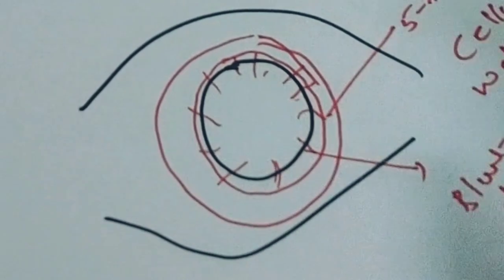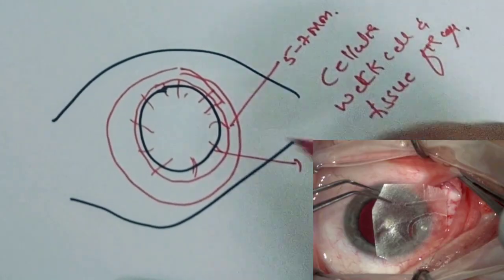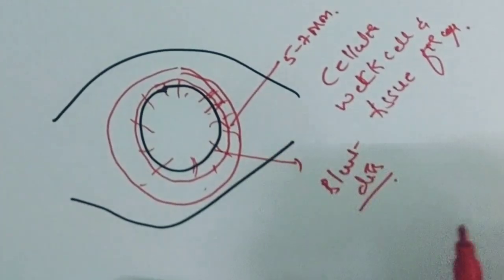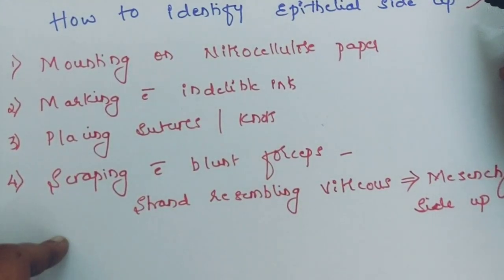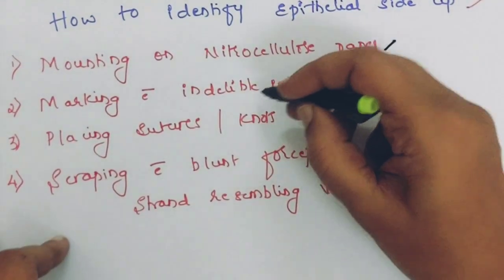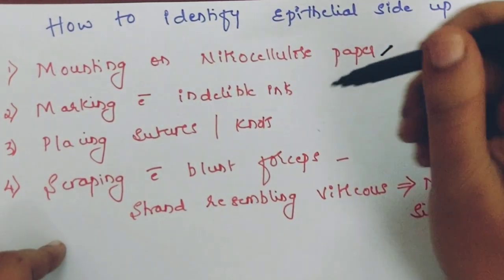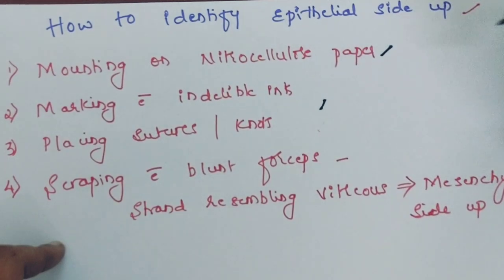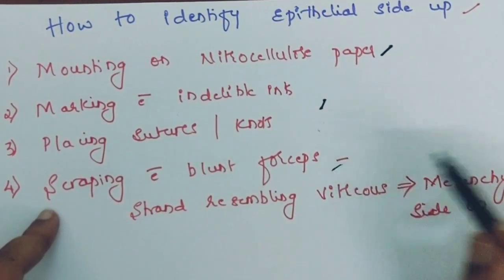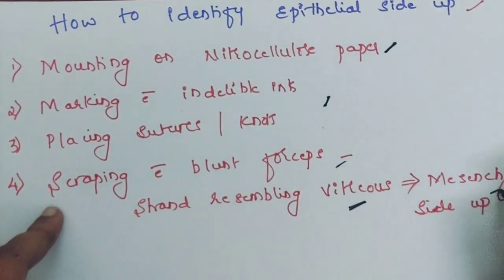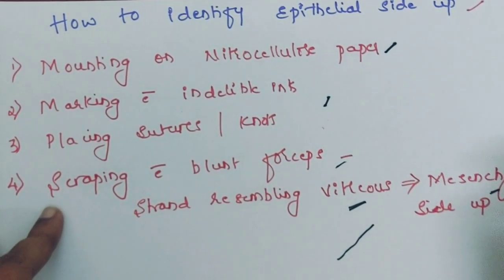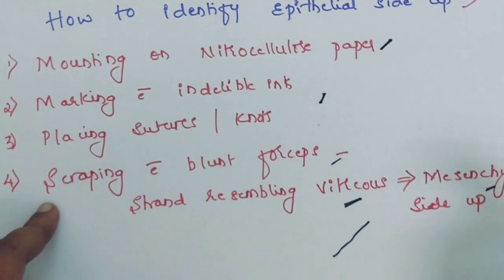The amniotic membrane is peeled from the nitrocellulose paper with the epithelial side up and placed in the defective area, then secured with 10-0 monofilament nylon. To identify the epithelial side: it is mounted on nitrocellulose paper epithelium-up; you can mark it with indelible surgical ink; pass a needle through so the sharp end faces the stroma; or gently scrape with blunt forceps — if you see vitreous-like strands, you are scraping the mesenchymal/stromal side.